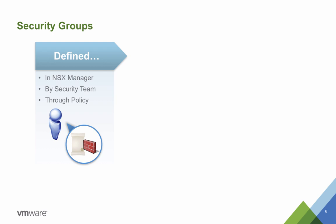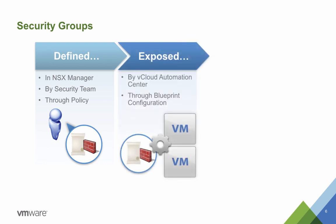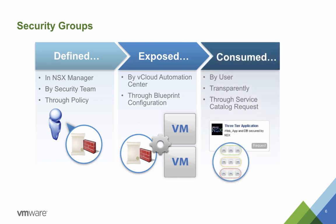Security groups are created in NSX Manager by your security team in accordance with your corporate policies and allow for dynamically provisioned workloads to inherit the security policies associated with these security groups. Security policies include traditional rulesets such as allowed services and source-destination rulesets, but can also include endpoint services such as antivirus, vulnerability management and data security, as well as network introspection services. In combination, these provide a powerful suite of security services for your applications. vCloud Automation Centre will discover these security groups when it runs a data collection against your NSX Manager, at which point they can be assigned to a multi-machine blueprint. When a user requests a catalogue item through the service catalogue, the provisioned workloads will be added to the defined security groups with no input required from the requesting user.